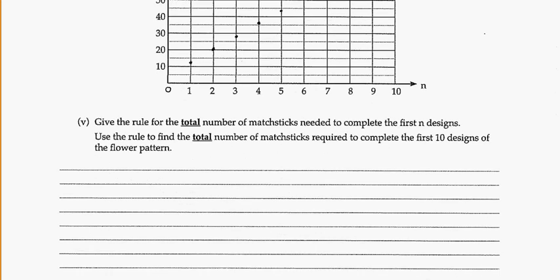Last part of this question. Give the rule for the total number of matchsticks needed to complete the first N number of designs. And use this rule to find the total number of matchsticks required to complete the first 10 designs. So, we need to think about what we're doing here. And it's a common problem we see where they ask us to actually find the total. So, to remind us of what we're doing here, we've got N, M. We've already got this information. We have 1, 2, 3, 4, 5. Those are the first 5 points. And we've got 12, 20, 28, 36. And from the patterns, we have to figure out what's our total number. And that's what they're asking us to figure out. So, our total numbers.